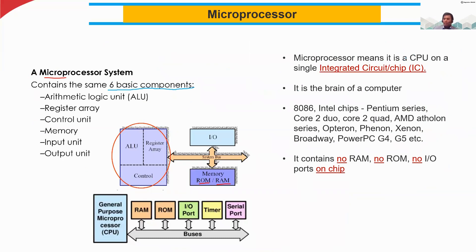A microprocessor means it's a CPU on a single integrated circuit, or simply we can call it an IC. That is why we call this an IC, and this is the brain of the computer.